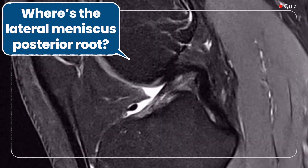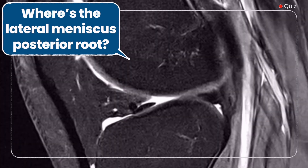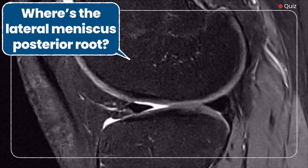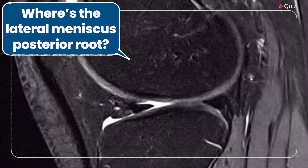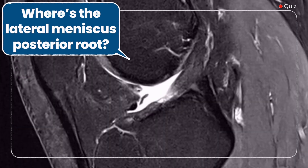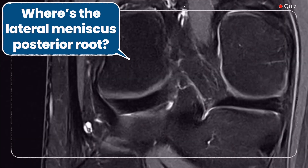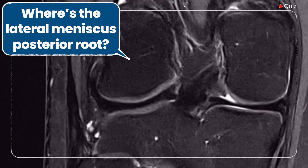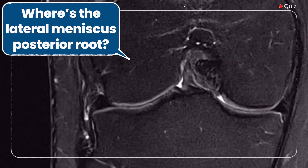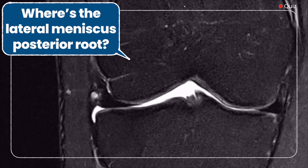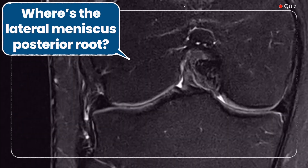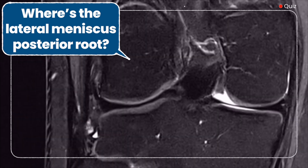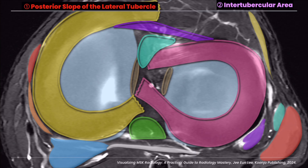Let's take a look at a normal sagittal image of the knee. Try to locate the posterior root of the lateral meniscus here. Understanding the normal anatomy is the foundation for recognizing pathology. Knowing the insertion sites is crucial.